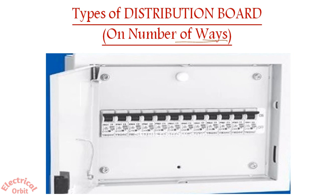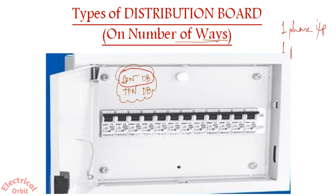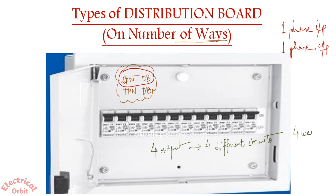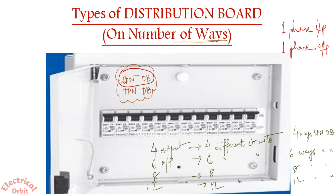The most important part for designing is the number of ways — sometimes students or designers get confused by this concept. For SPN DB: if you require four outputs, go for a four-way SPN DB; for six outputs, use a six-way SPN DB; for eight outputs, an eight-way; and for twelve circuits, a twelve-way SPN DB.